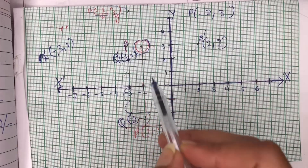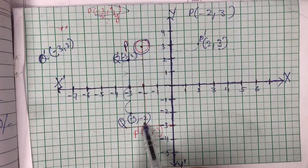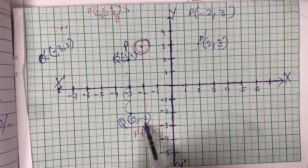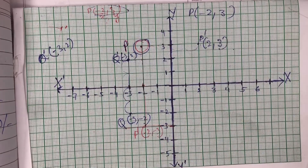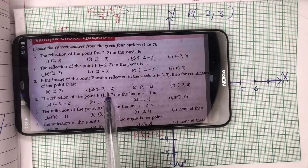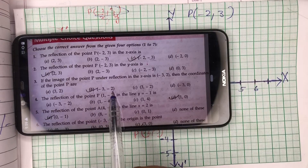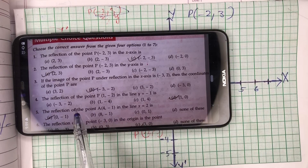So if X-axis reflection: X coordinate remains the same, Y coordinate change hoga — yahan par positive 2 tha, yahan par minus 2 ho gaya. So the correct answer is minus 3, minus 2 — that is option B.